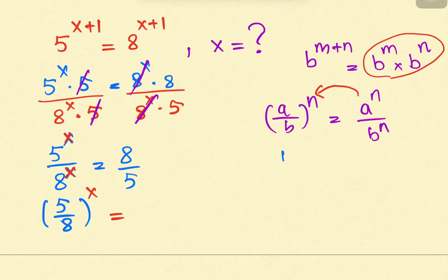This is the exponential equation rule: b raised to m equals b raised to n if and only if m equals n. We must create bases that are the same.